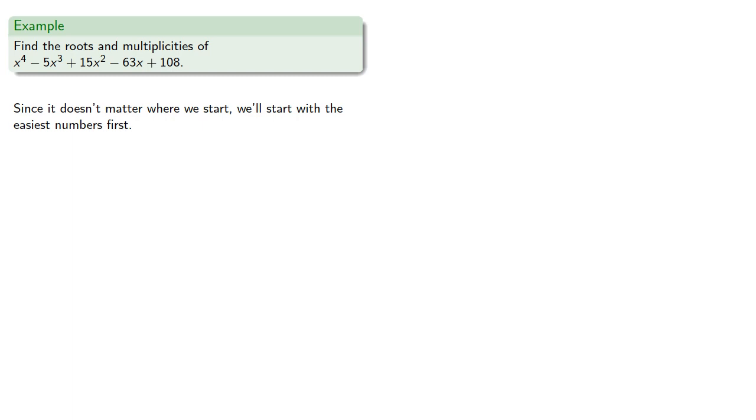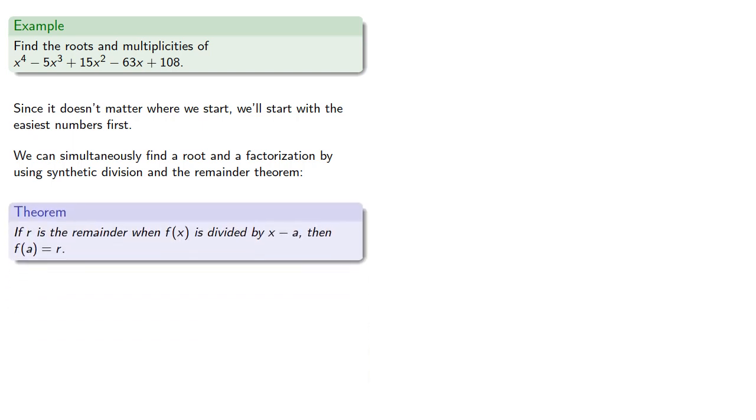And we can simultaneously find a root and a factorization by using synthetic division and the remainder theorem. If r is the remainder when f(x) is divided by x minus a, then f(a) is equal to r. And so we want a remainder of 0, which will give us a factorization and a root.